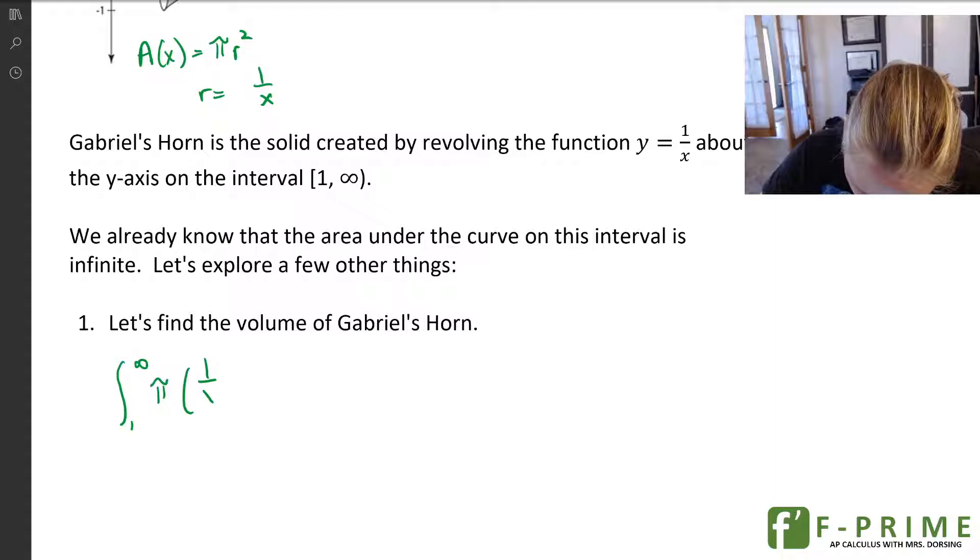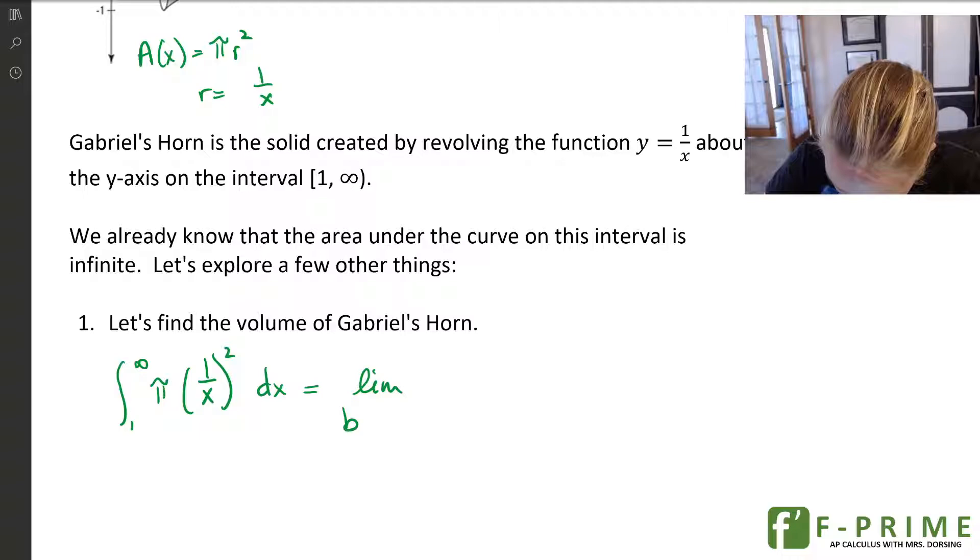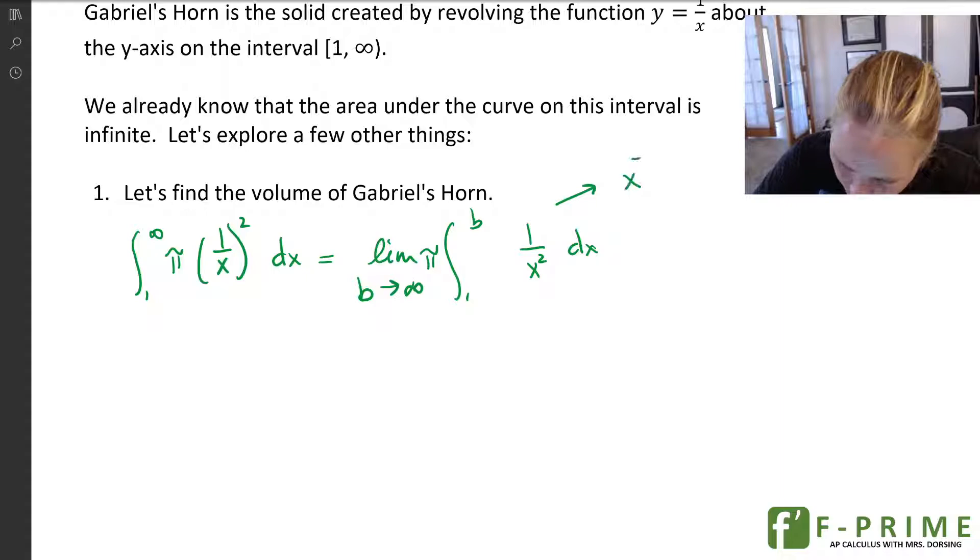So here we go. So I'm going to go from 1 to infinity, and I'm going to have πr² dx. So there's my setup. Now I'm going to express it as a limit as b approaches infinity, 1 to b, π, and I'll write it as 1 over x squared. I'm going to pull the π out actually, let's put it on the outside. That makes it a little easier to integrate this. So now when I integrate, I'm going to consider this as x to the negative 2. So when I integrate, I'm going to add 1 and then divide.